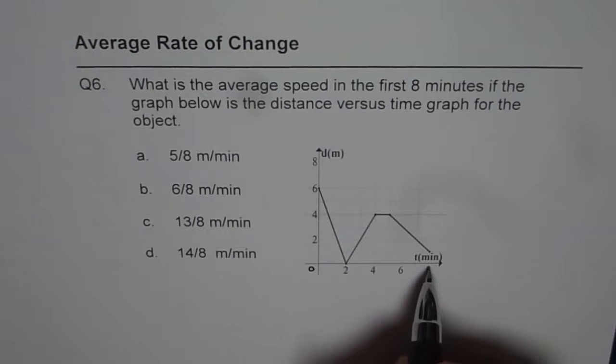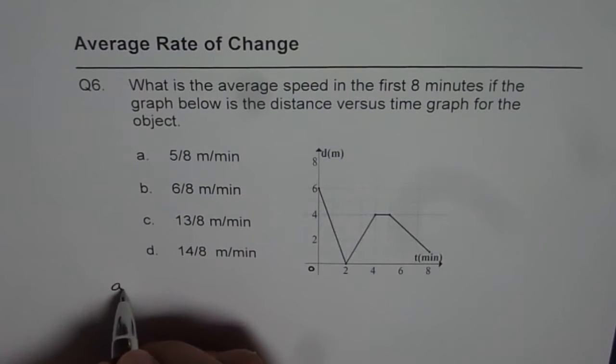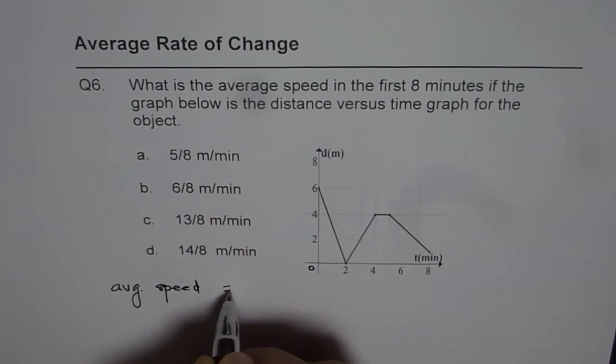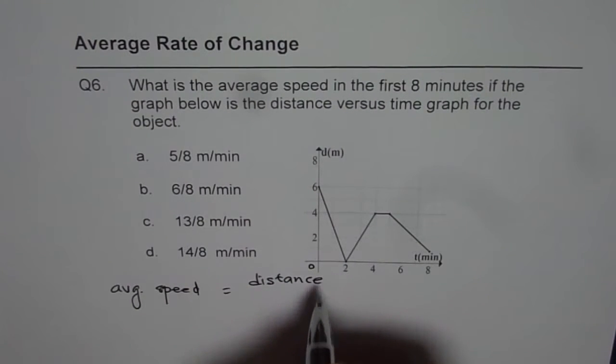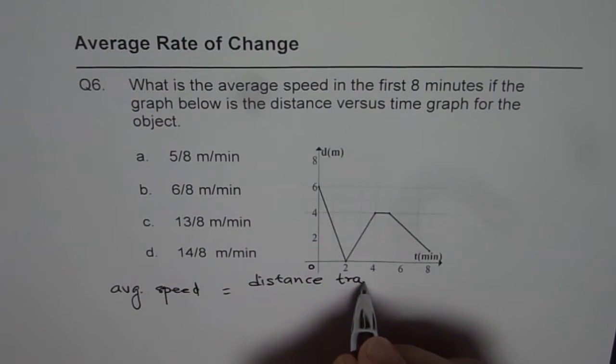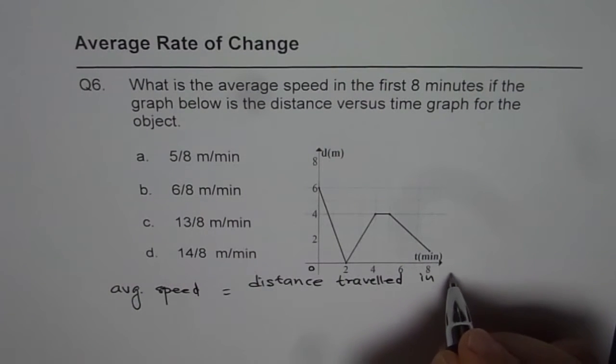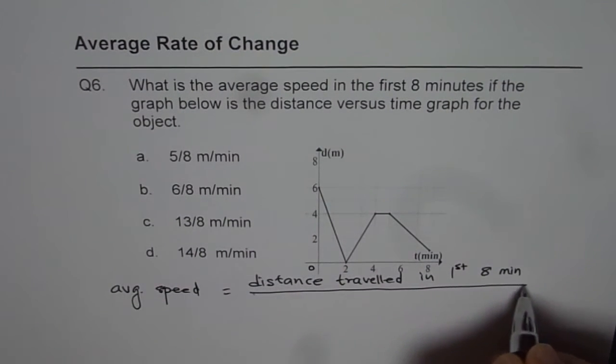If we have a time period of eight minutes here and we need to check how much distance was covered during the first eight minutes. So the average speed is distance travelled in first eight minutes divided by eight minutes.